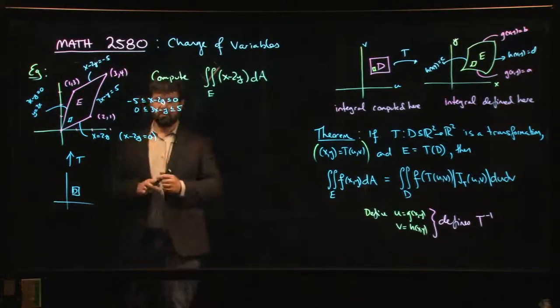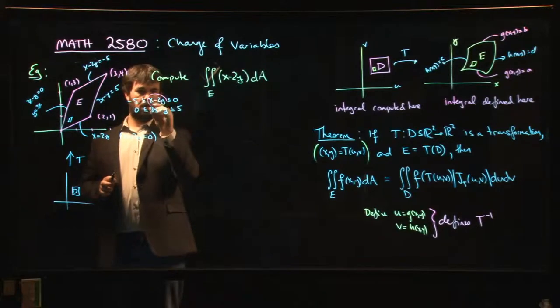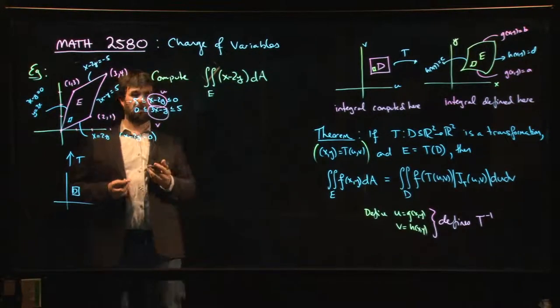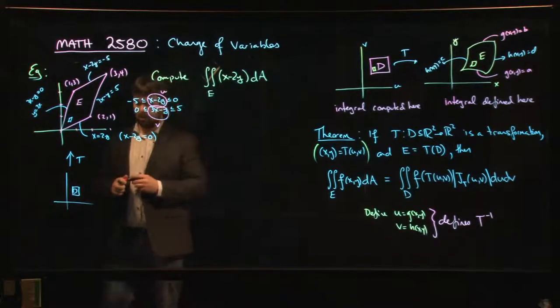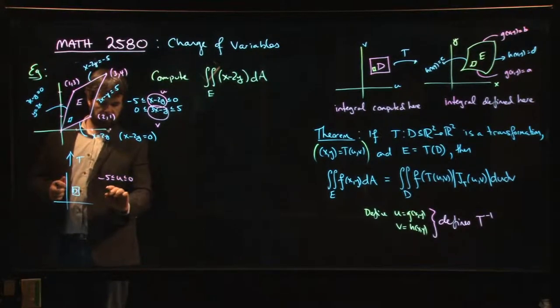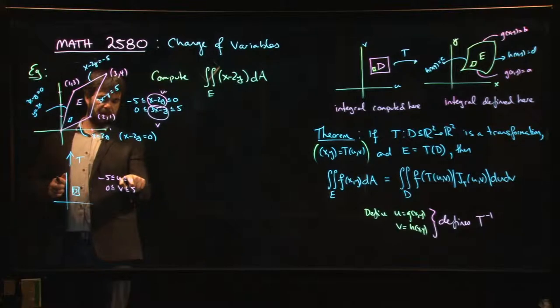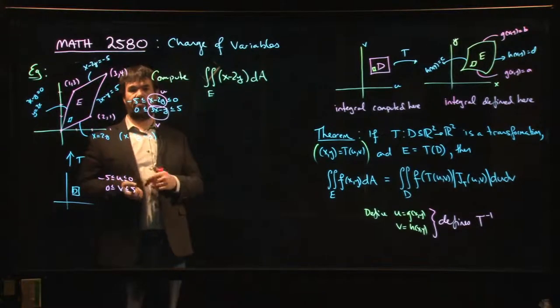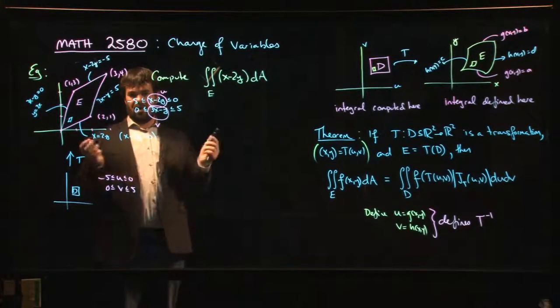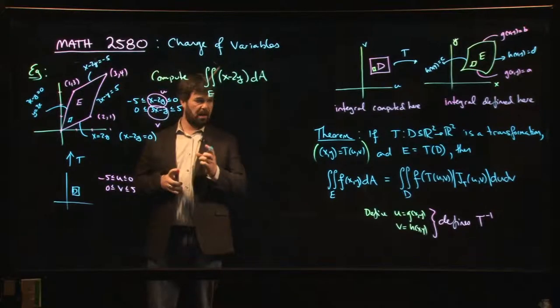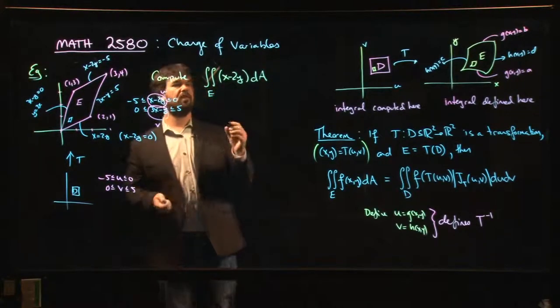So now what we do is we say, hey, let's let that be u, let's let that be v. So now we know over here that we're working with the following inequalities, and we see that we do indeed have a rectangle. If you don't like the fact that u goes from minus 5 up to 0, if you think it should have gone from 0 to 5, that's fine—change the definition of u. But there's no single way of doing this, there's lots of possibilities.